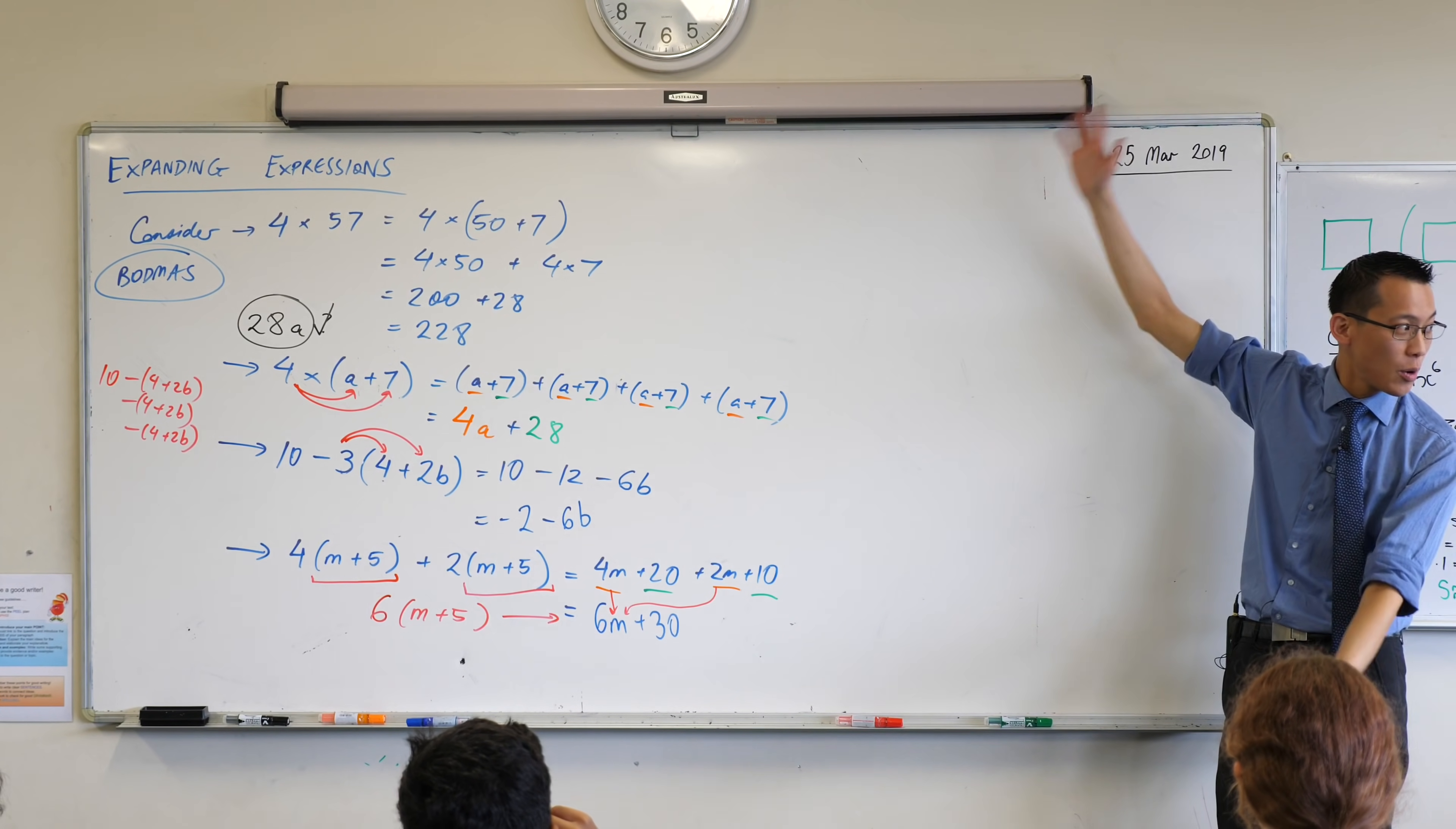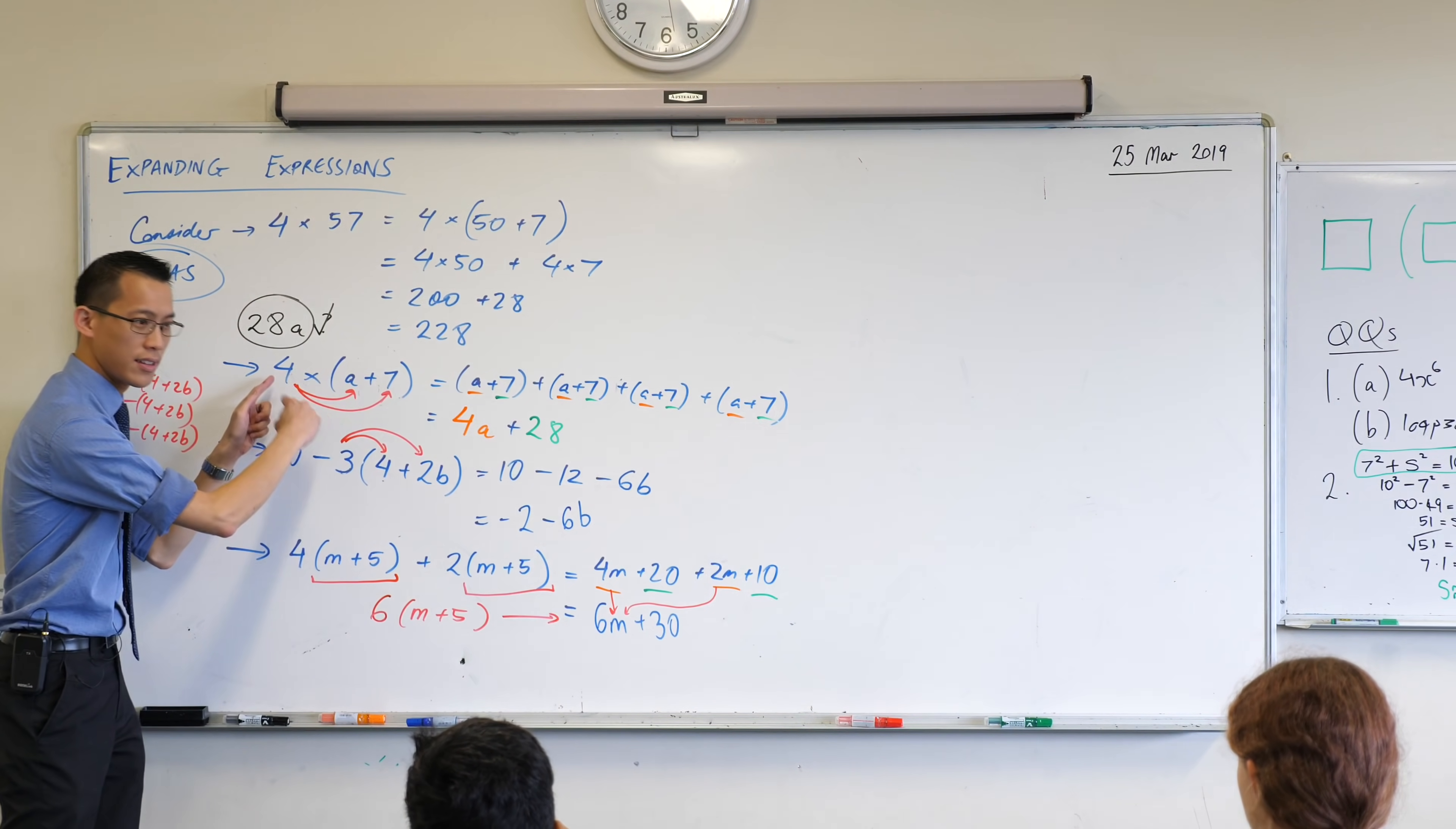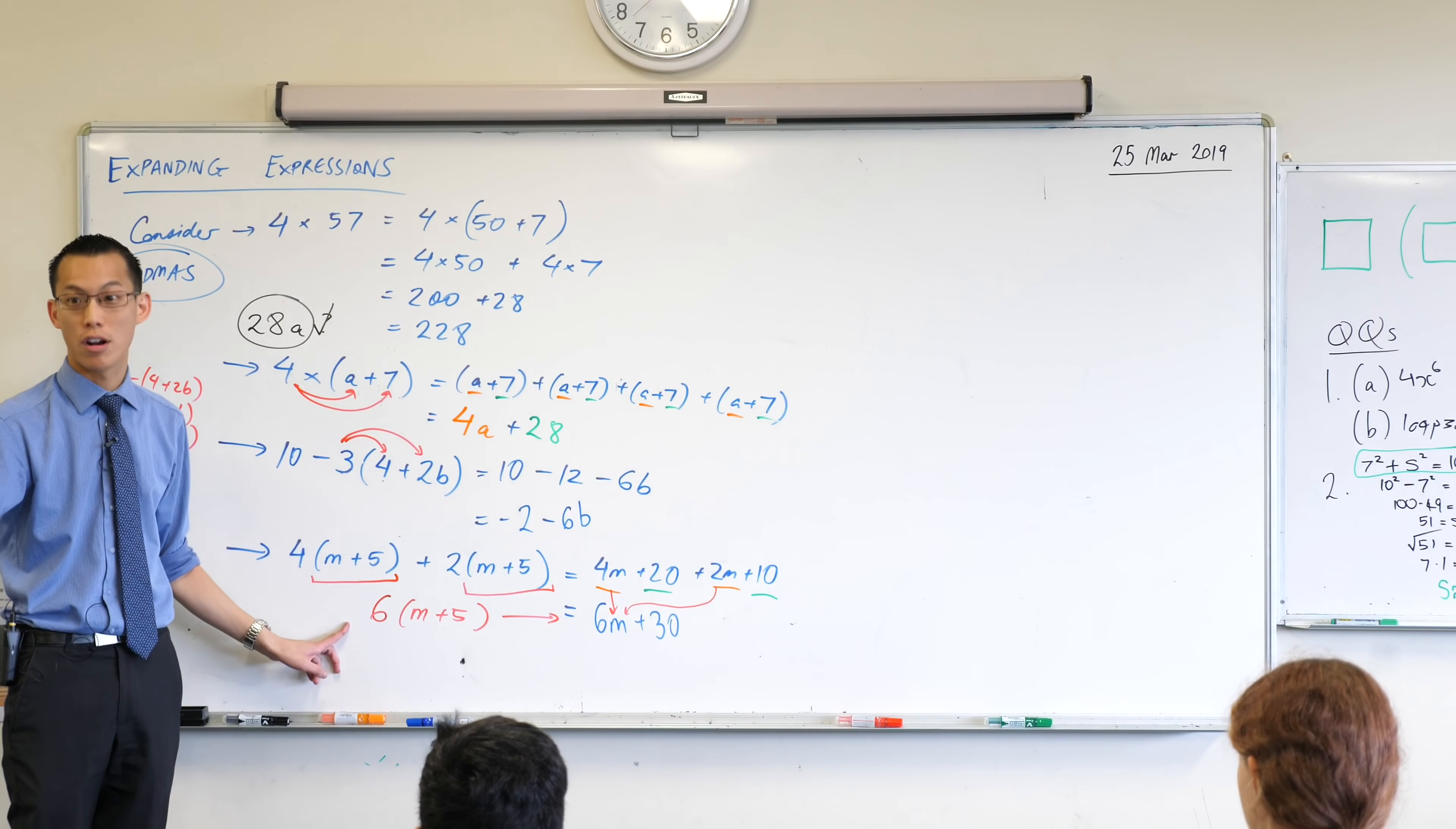Alright, so you can see here, when we're expanding expressions, the important things are, number 1, wherever you can, you collect your like terms together. We don't need to write out in this long way, we can just take one term at a time. And secondly, look for things that can make things a bit easier for you, if possible, because the less work there is, the less chance there is for you to make an error. Does that make sense?